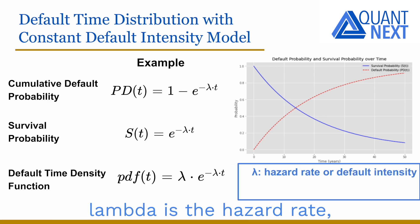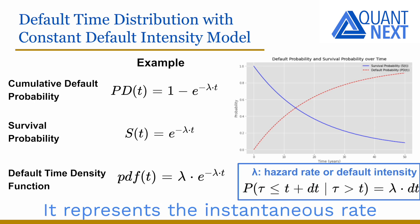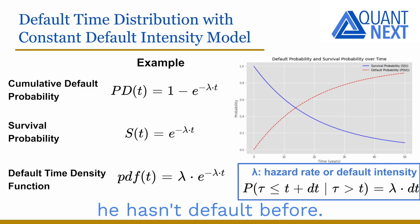Lambda is the hazard rate, also known as the default intensity or failure rate. It represents the instantaneous rate at which a borrower is expected to default at any given time, given that he hasn't defaulted before.